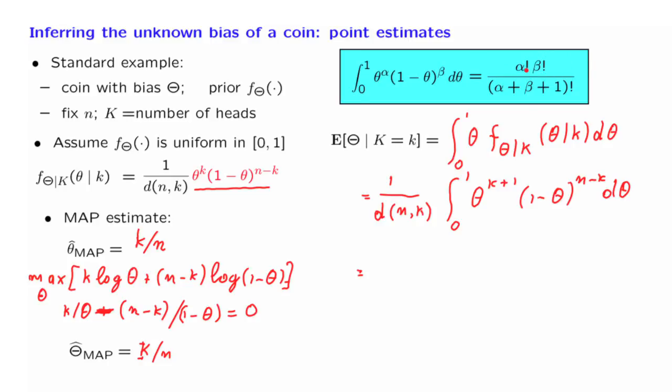This formula tells us that the integral of such a function of theta, from 0 to 1, is equal to this very nice and simple expression. Of course, this formula is only valid when these factorials make sense, so we assume that alpha is non-negative and beta is non-negative. How is this formula derived? There's various algebraic or calculus style derivations. One possibility is to use integration by parts, and there are also other tricks for deriving it. It turns out that there is also a very clever probabilistic proof of this fact. But in any case, we will not derive it.